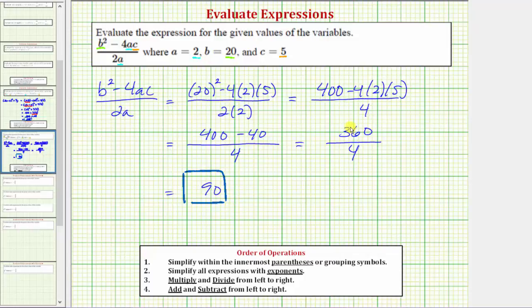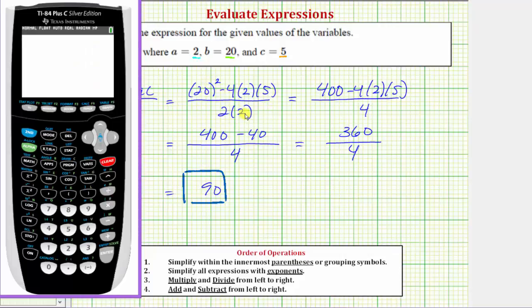Before we go, let's verify this on the graphing calculator. So we'll enter the original expression here after the substitution. Though we do need a set of parentheses around the numerator and denominator. So we'll have open parenthesis. And then we have 20 squared minus 4 times 2 times 5. Another closed parenthesis for the numerator.